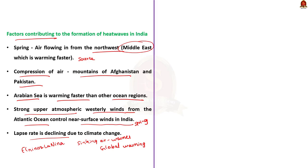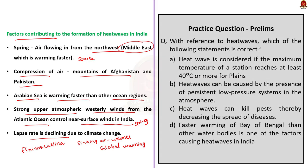Now read the question. Statement 1 is correct. Statement 2 says heat waves can be caused by persistent low pressure systems — this is incorrect; it is high pressure. Statement 3 says heat waves can kill pests thereby decreasing the spread of diseases — this is incorrect; heat stress can cause crop failures and contribute to the spread of pests and diseases. Statement 4 says faster warming of the Bay of Bengal is one factor causing heat waves in India — this is incorrect; it is the Arabian Sea. The answer is option A.